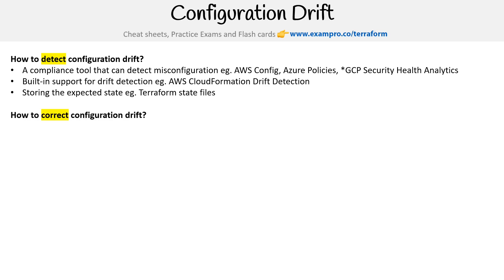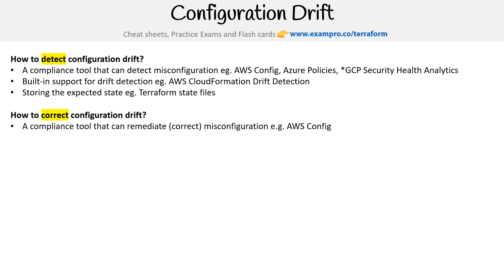To correct configuration drift, compliance tools can remediate. For example, with AWS Config you can create a custom Lambda to say: when this happens, do this — set the configuration back into place. With Terraform, you can use the refresh and plan commands, which we'll look at in detail in this course.